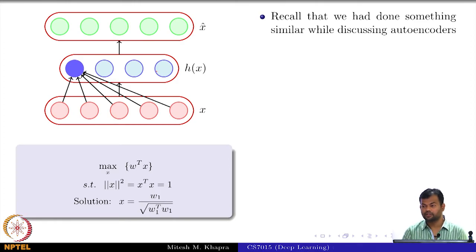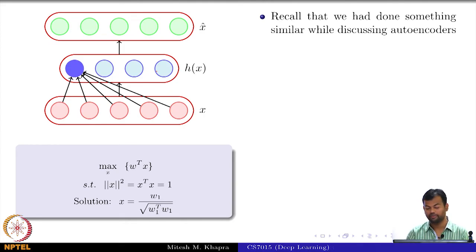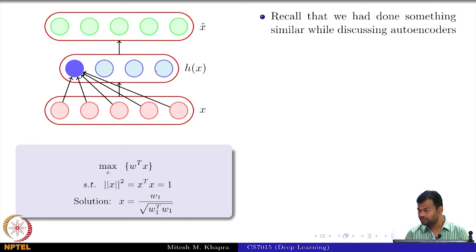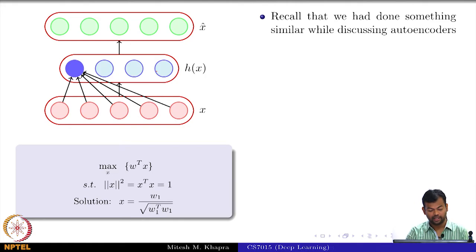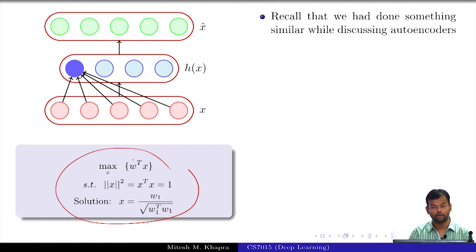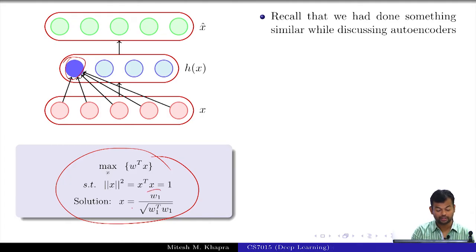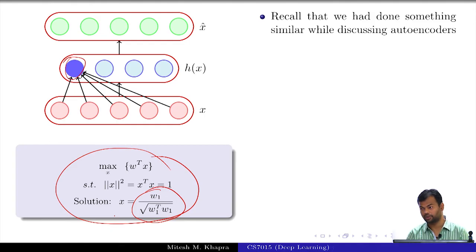We have done something similar while discussing autoencoders. We were interested in knowing that there is a particular hidden neuron inside the autoencoder, and we wanted to see what does this neuron capture. So if I give it MNIST digits, then what kind of patterns does it fire for? And if you remember, we had solved this optimization problem and realized that this neuron will fire for an input which looks like W1 — all the weights connecting to this neuron.